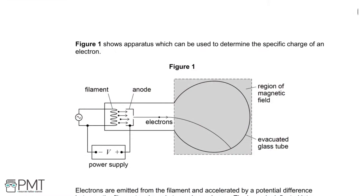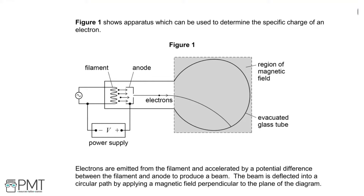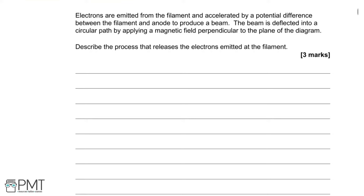Figure 1 shows apparatus which can be used to determine the specific charge of an electron. There's figure 1 with apparatus used to release electrons which are then affected by a magnetic field shown by that shaded region, and this is all taking place in a vacuum. Electrons are emitted from the filaments and accelerated by a potential difference between the filament and anode to produce a beam. The beam is deflected into a circular path by applying a magnetic field perpendicular to the plane of the diagram.